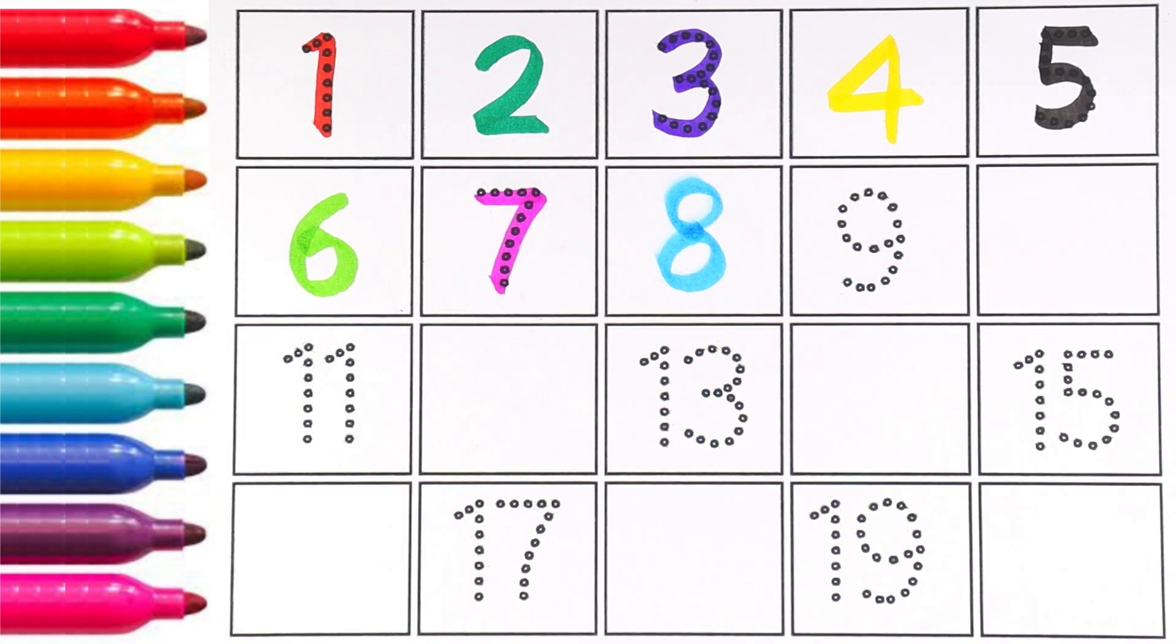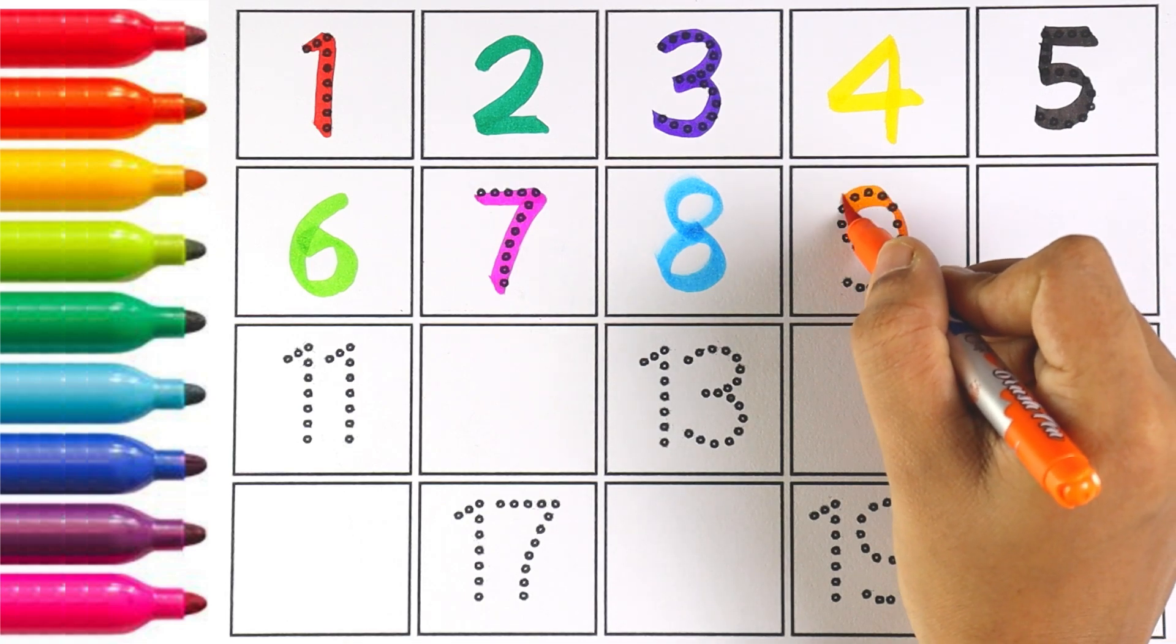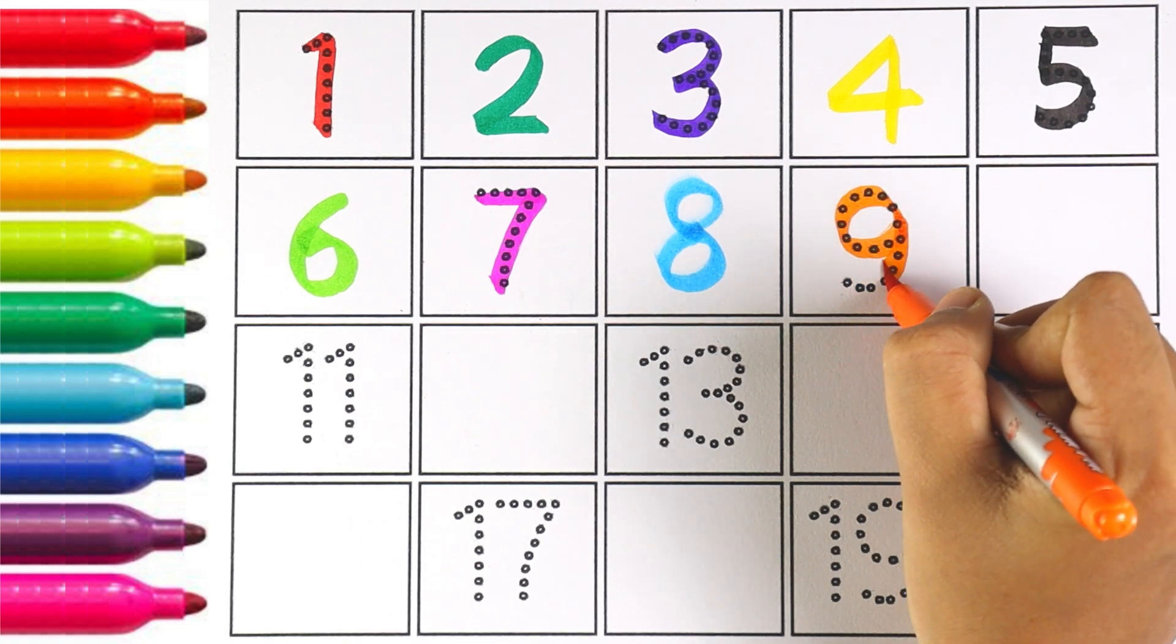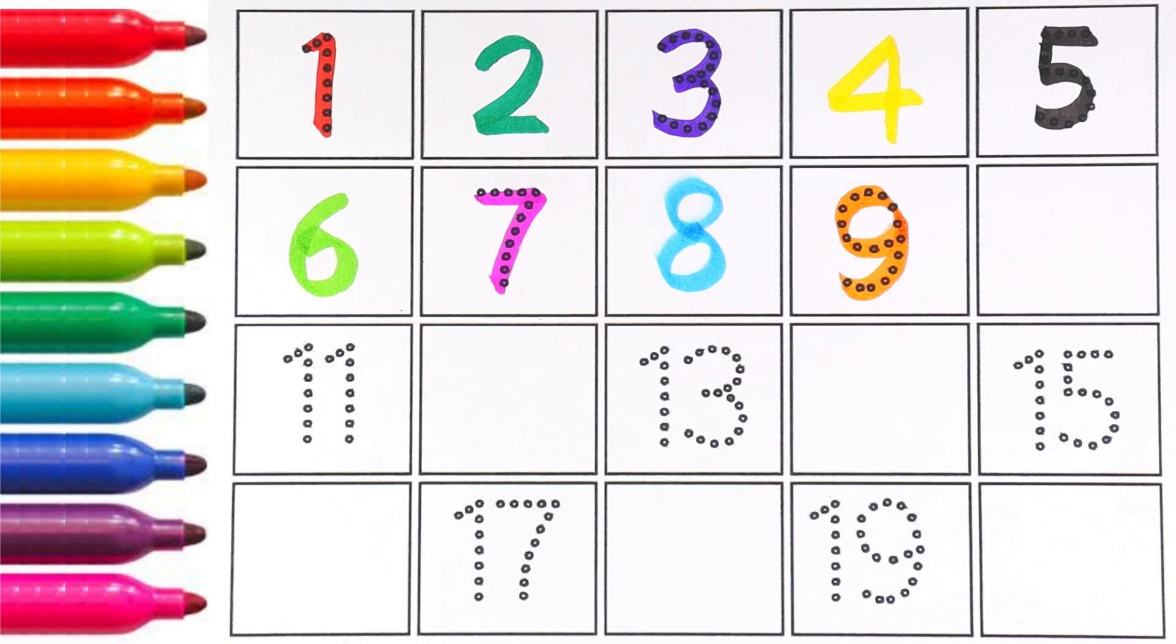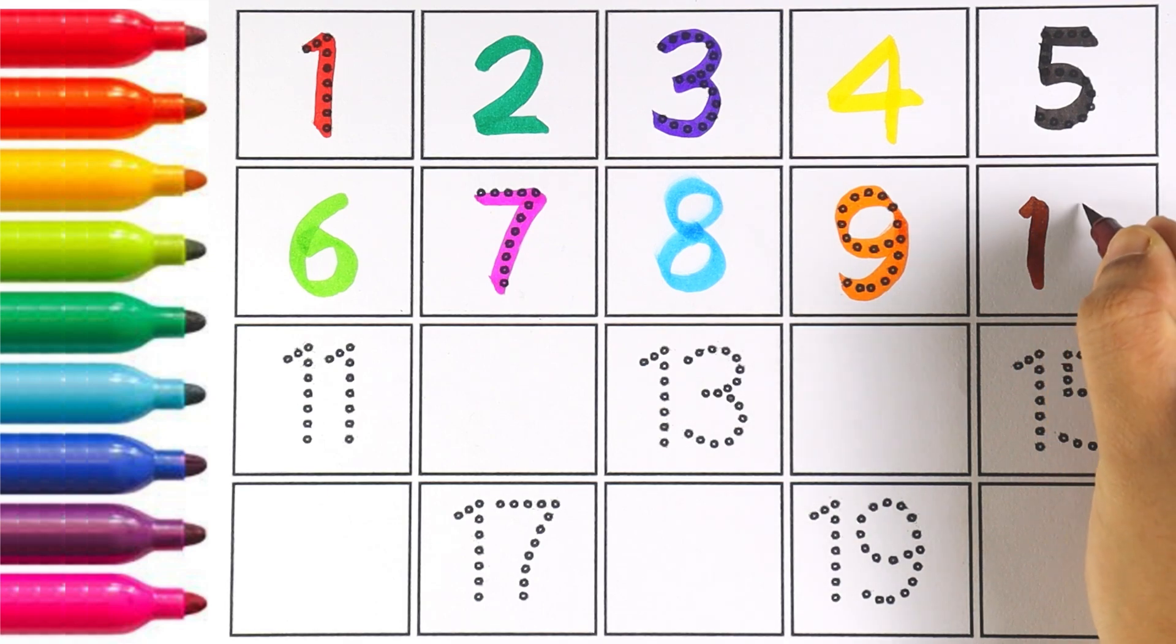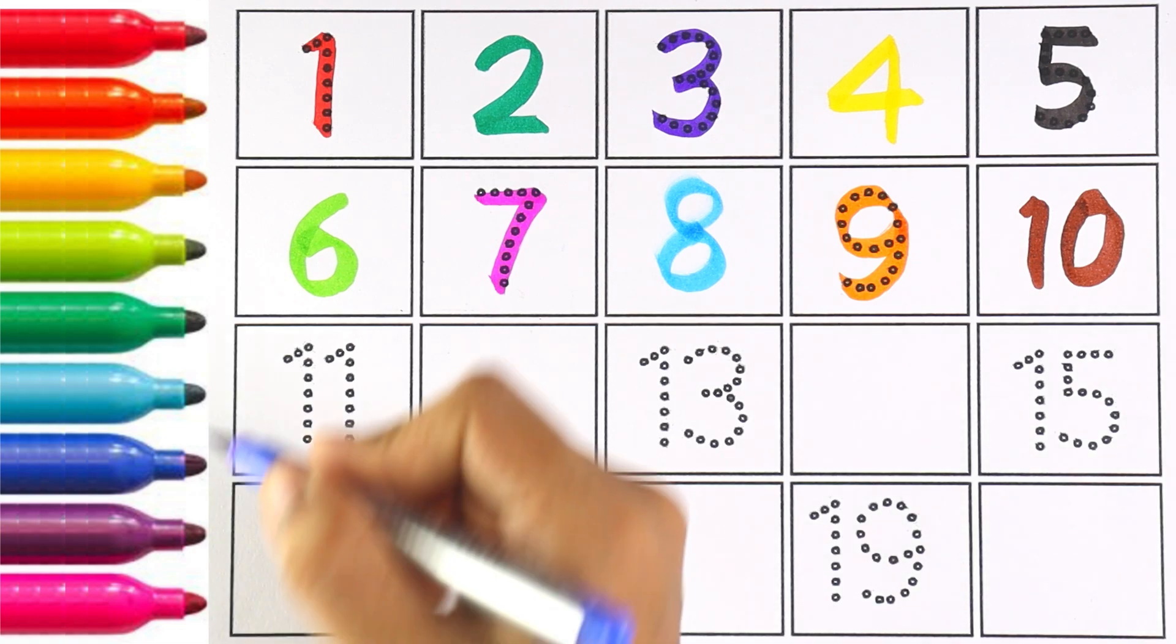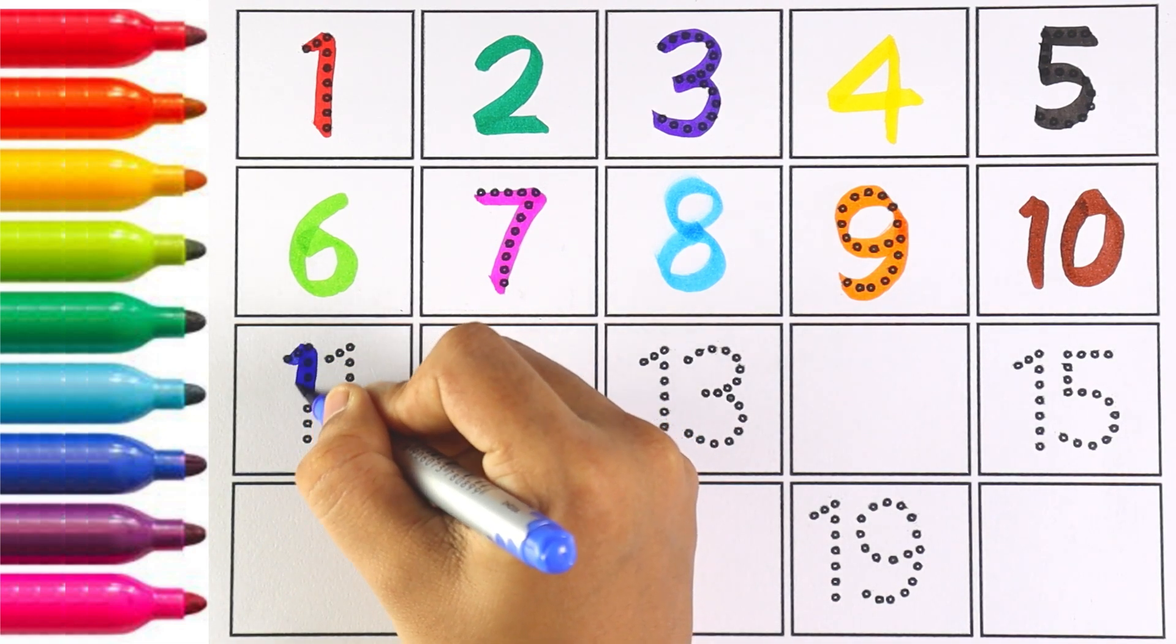Number eight. Now I'm writing number nine. Which number is this kids? Number nine. Number ten. One and zero makes the number ten. Number ten, number eleven.